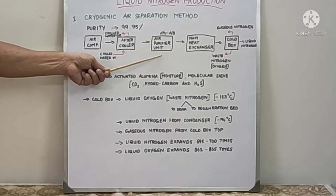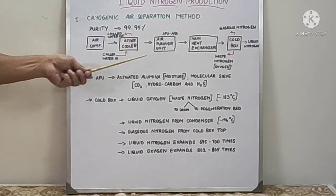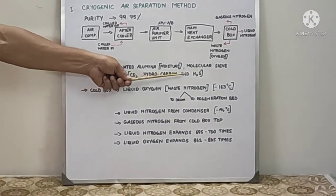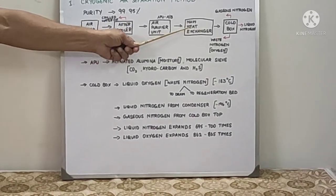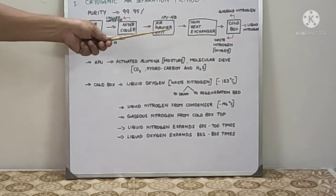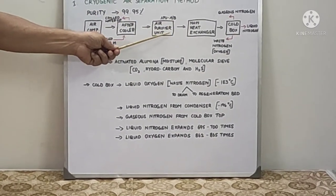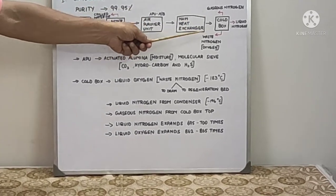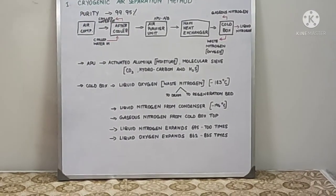For four or five hours heating, then another four hours cooling, then it will be ready for service. The air purifier unit removes CO2, water, hydrocarbons, and hydrogen sulfide. It goes to the cold box through heat exchanger. This main heat exchanger plays a vital role, getting inlet from air purifier as well as from cold box, and outlet going to the cold box and back to the receiver.